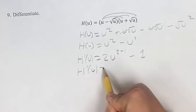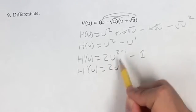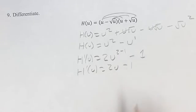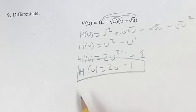Simplifying the derivative here we have two u to the two minus one. U to the two minus one is u to the one, u to the one is u, just leave it as u minus one. That is your final answer. Make sure it's clear that h prime of u equals two u minus one.